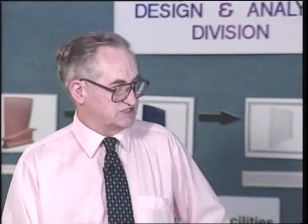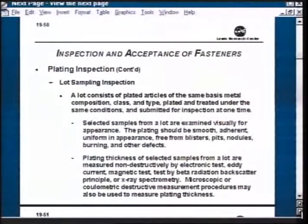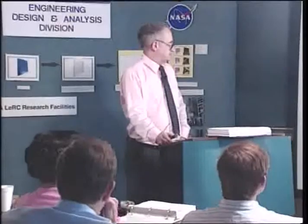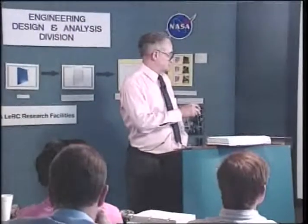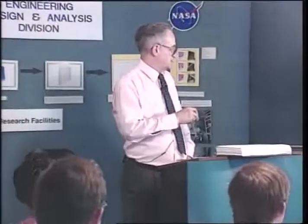The lot sampling technique - you can take a lot of plated fasteners of the same metal composition, take a bunch of samples out, visually inspect them, look to see if the plating is smooth, and whether it adheres properly, whether it has blisters, pips and that sort of thing. You can measure them non-destructively by various tests: there's an electronic test, eddy current, magnetic, beta radiation backscatter - all of these things are covered in one of the sections of MIL Handbook H-28.